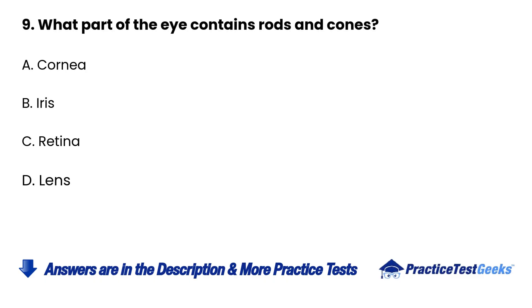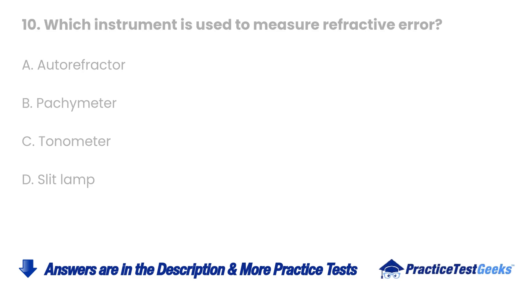9. What part of the eye contains rods and cones? A. Cornea B. Iris C. Retina D. Lens